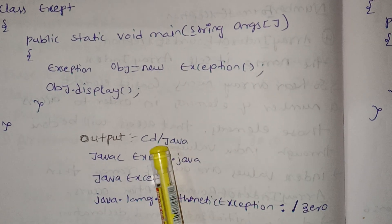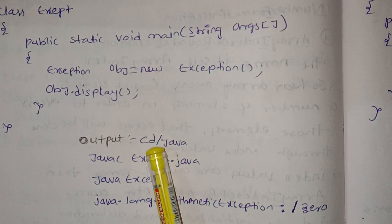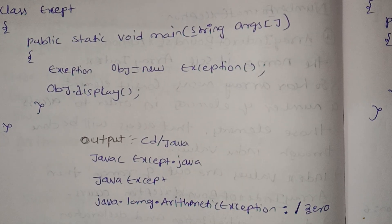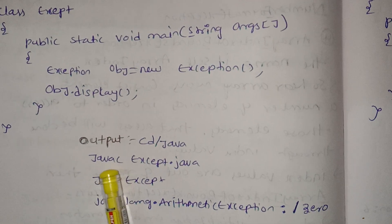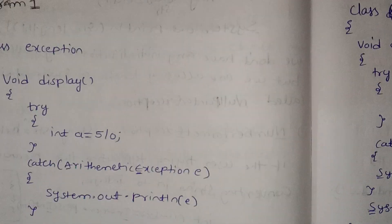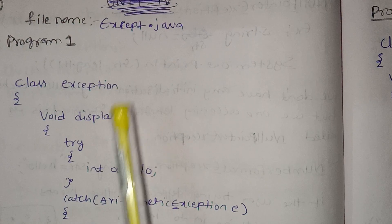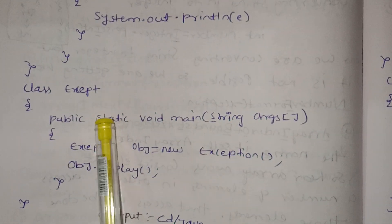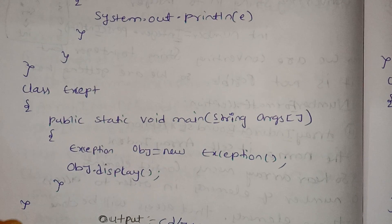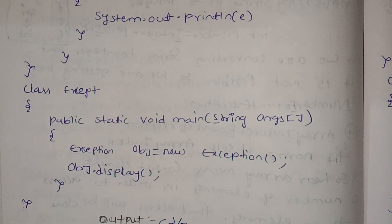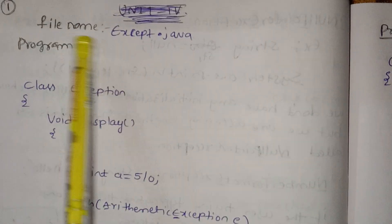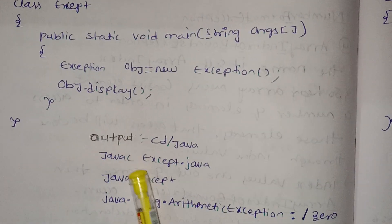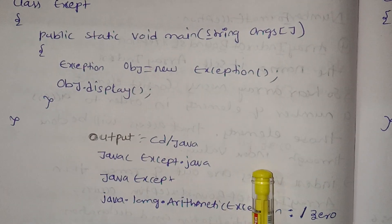To run the program, open the command prompt, navigate using cd to the java path, compile using 'javac except.java', then run using 'java' followed by the class name.